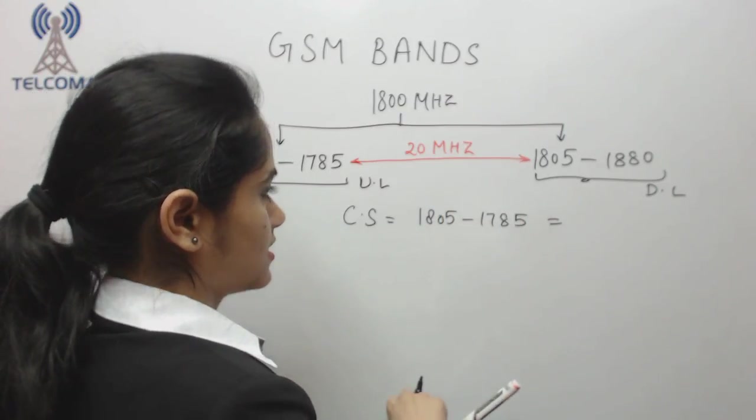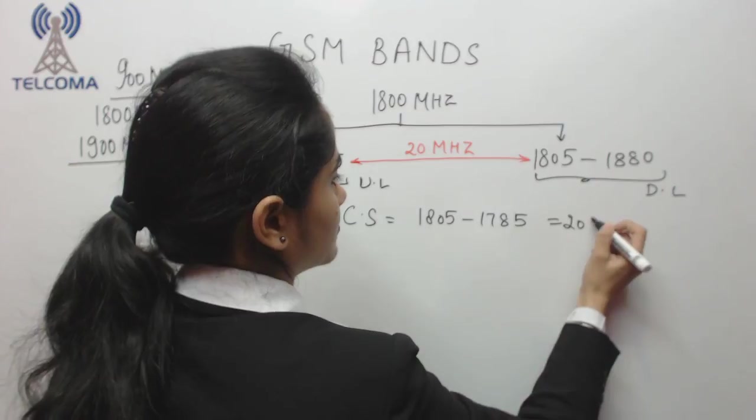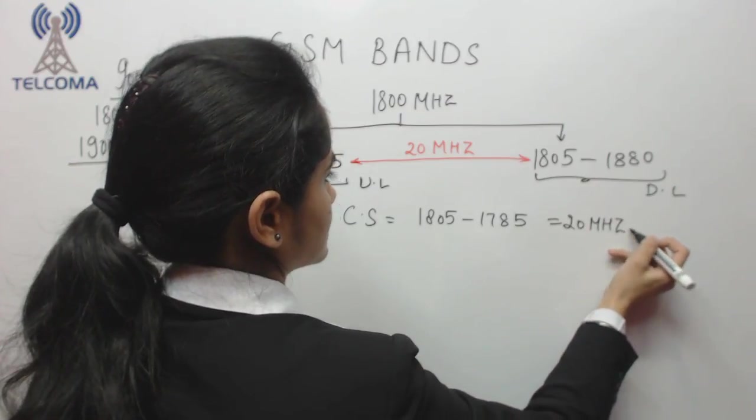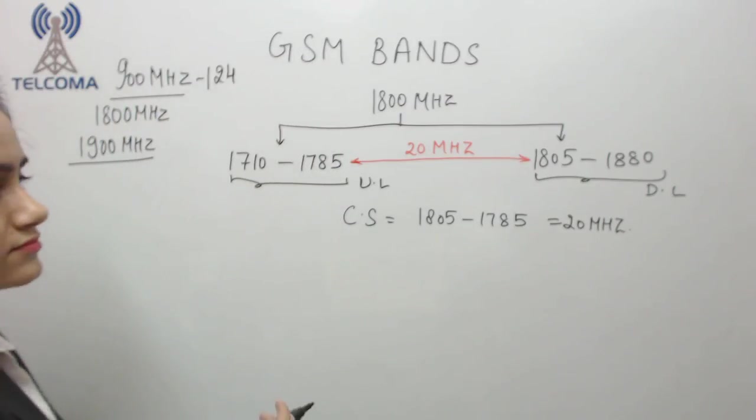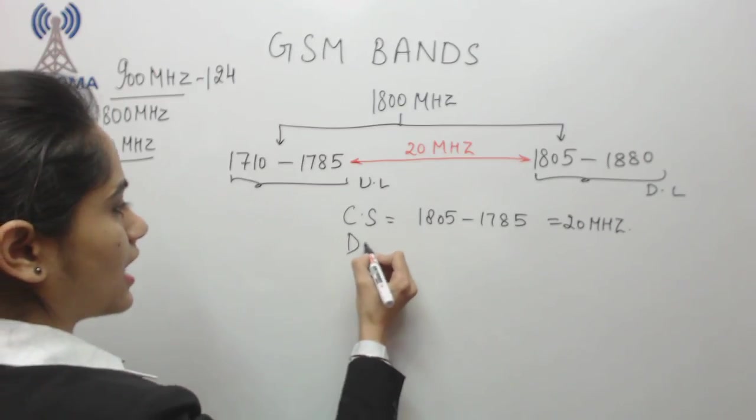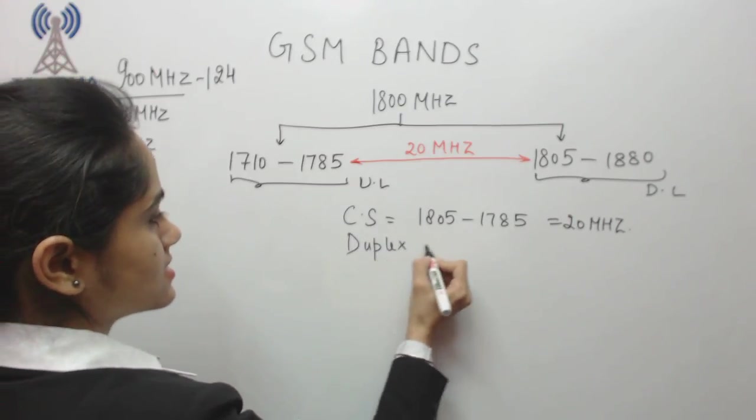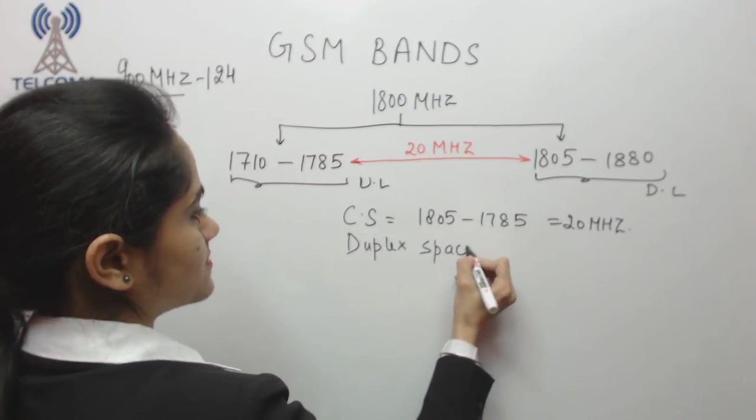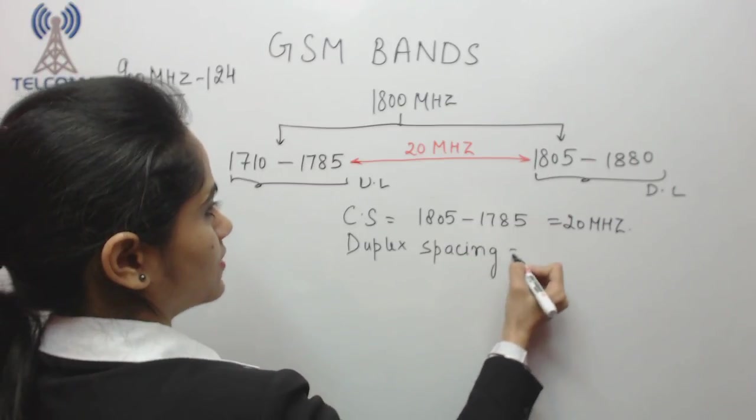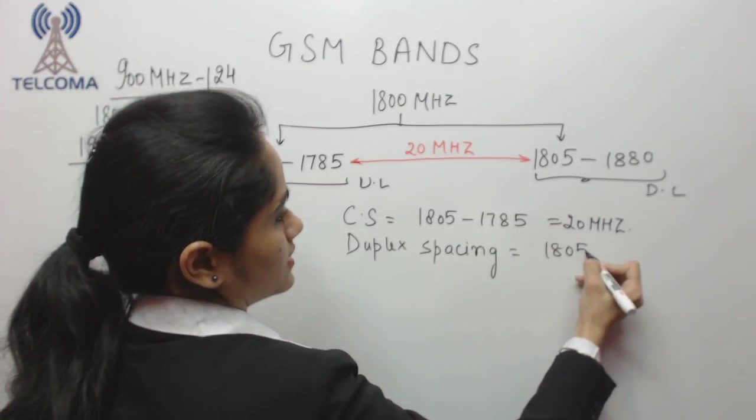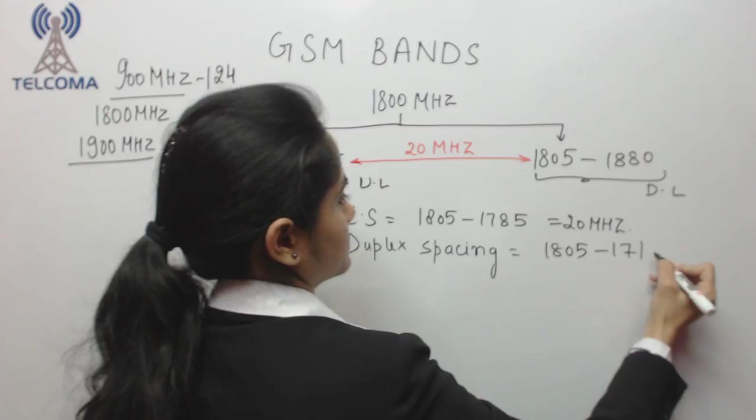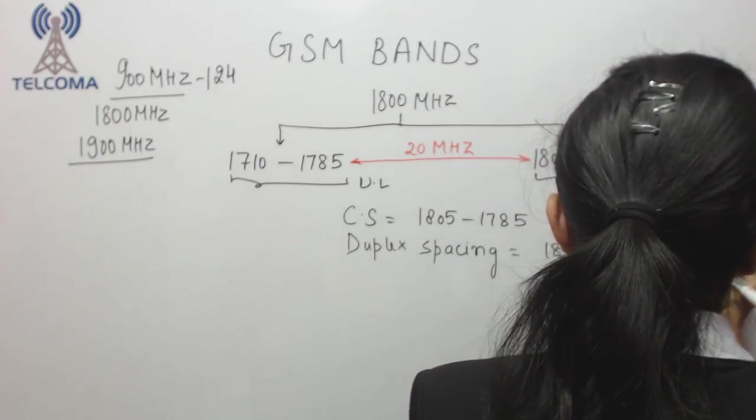Similarly we can calculate duplex spacing. Duplex spacing is basically the difference between the first downlink and the first uplink: 1805 minus 1710, which is 95 megahertz.